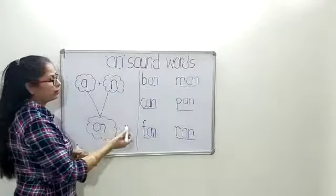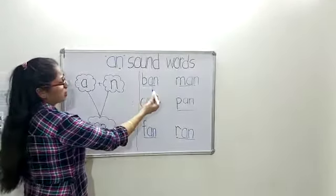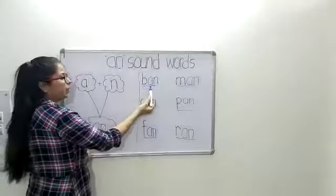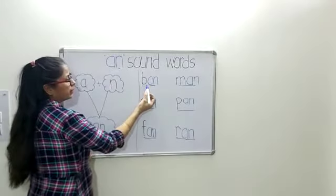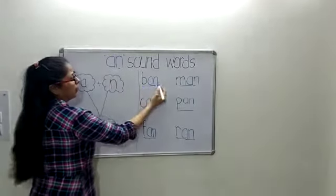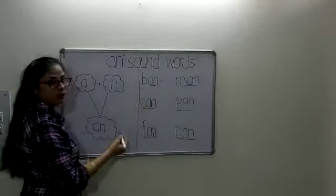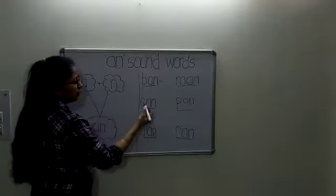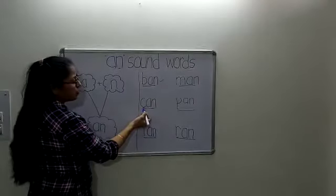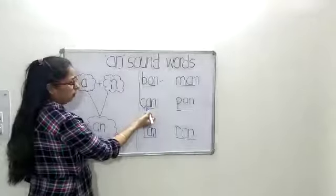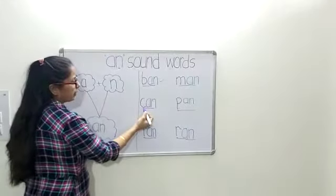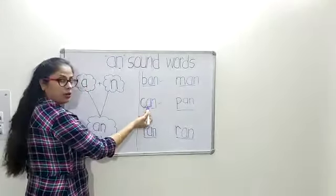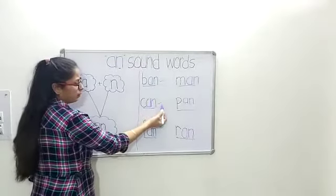So we have to revise these words once again. The phonetic sound of B is B, then B and AN — BAN. The phonetic sound of C is CA, then it becomes CA and CAN.